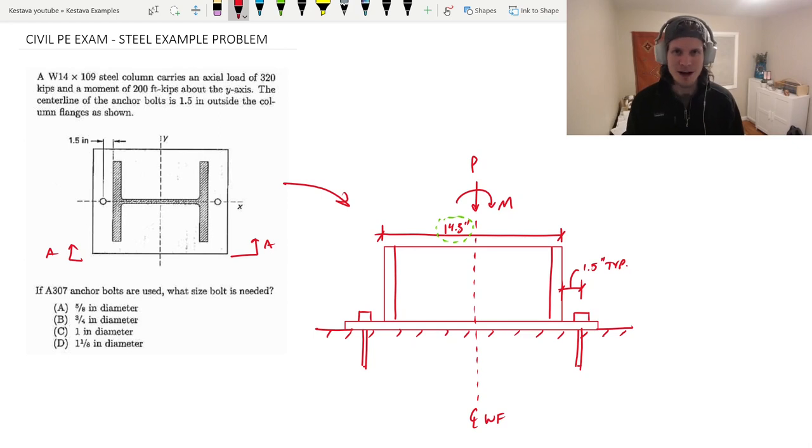I've already called out one new dimension for us. 14.3 inches is the depth of our steel column, our wide flange W14 by 109. You would go to your steel manual, to the front chapter, to your lists of wide flange sizes, and grab your D value. We're not going to go there right now. With the PE so close, that is already ingrained in your head. But if not, leave a comment and I'd be happy to go one-on-one with you.